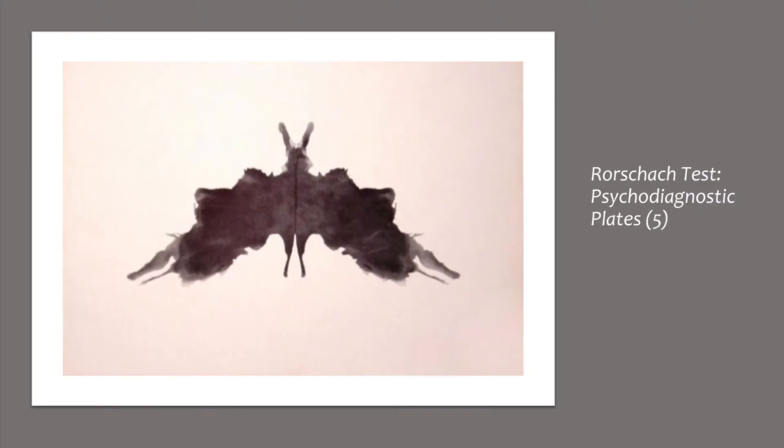Card five is an easily elaborated card that is not usually perceived as threatening, and typically instigates a change of pace in the test. After the previous, more challenging cards, containing few features that generate concerns or complicate the elaboration, it is the easiest blot to generate a good quality response about. The most popular responses were related to butterflies and bats.